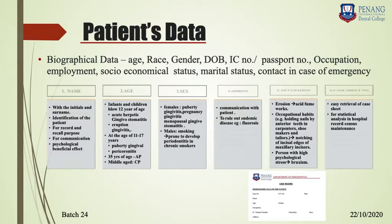Sex of the patient is also relevant. Gender helps identify certain periodontal and gingival diseases, as some are gender-oriented. For female patients, you can see puberty gingivitis, pregnancy gingivitis, and menopausal gingivitis — all of which are seen more in female patients than male patients.